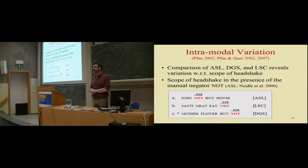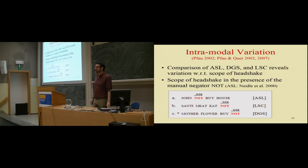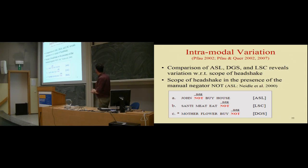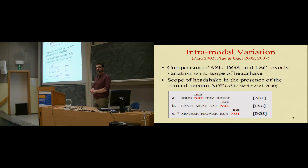Signs, just like words, consist of smaller units. A spoken word consists of consonants and vowels combined in sequence. A sign consists of locations and movements — location, movement, location — which people have called a sign language syllable. Then you have another element articulated simultaneously with the syllable: the non-manual. This looks very much like tone. Tone is supra-segmental — it constitutes a layer on top of the segmental layer. And the same is true for the head shake.